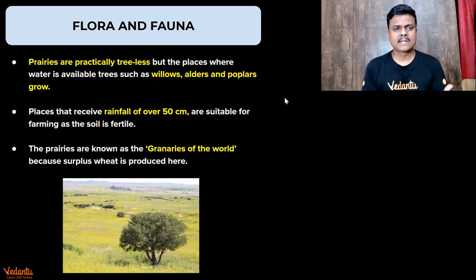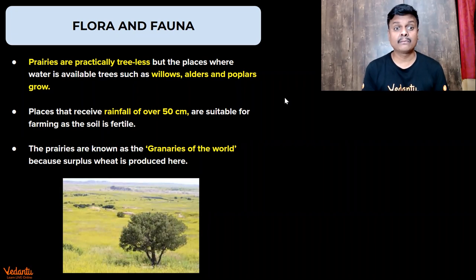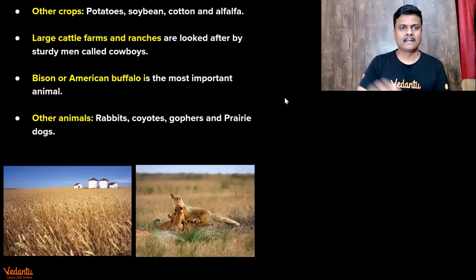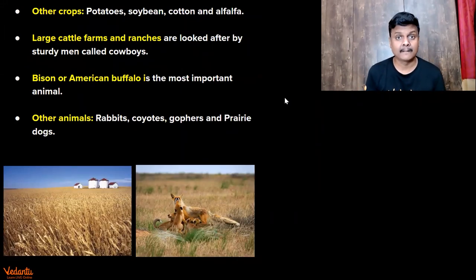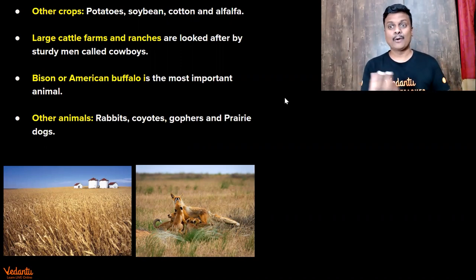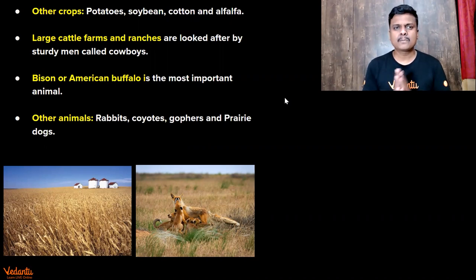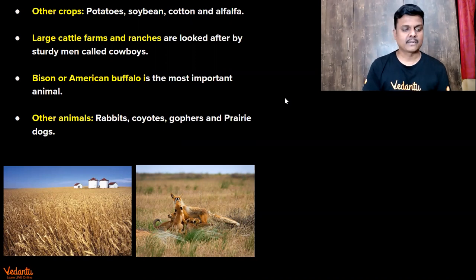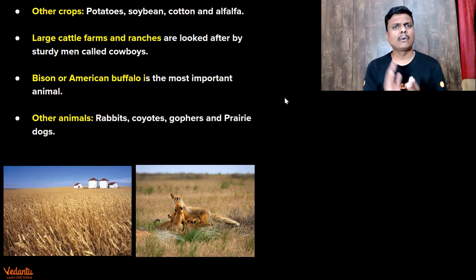When it comes to plants and animals, prairies are generally treeless grasslands. But wherever water or rainfall is present, small trees like willows, alders, and poplars are there. Wherever more rainfall happens, even crops can be cultivated. The prairies are called the granaries of the world because a lot of wheat production happens. Other crops are potatoes, soybeans, cotton, and alfalfa. Animals include bison and American buffaloes, and also rabbits, coyotes, gophers, and prairie dogs.